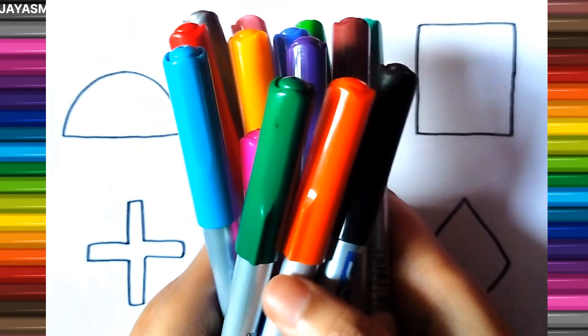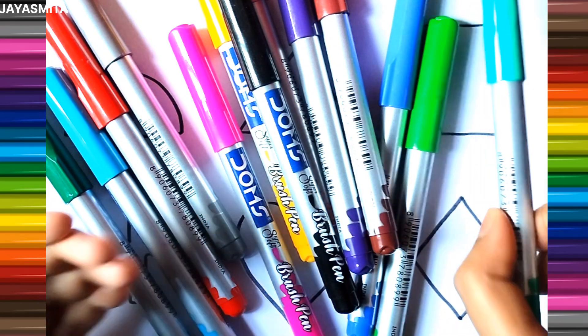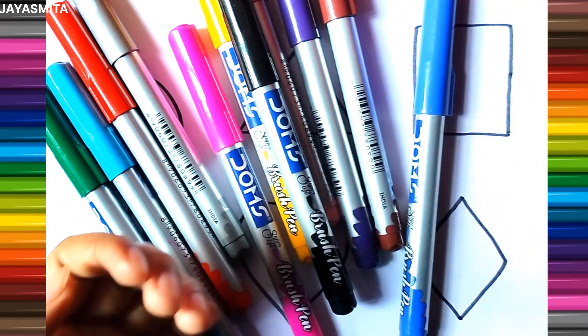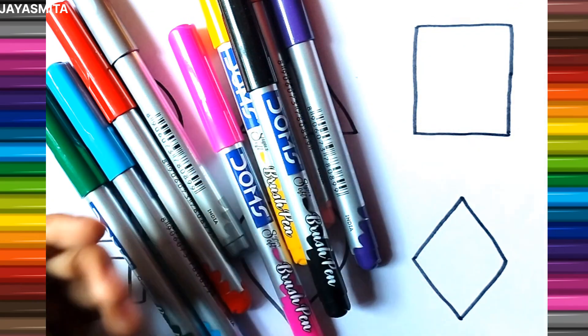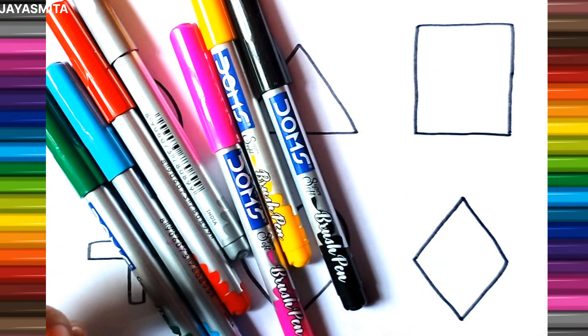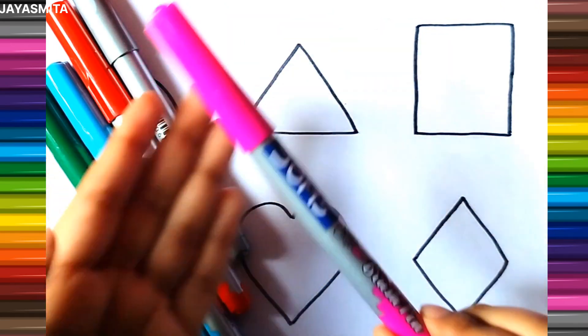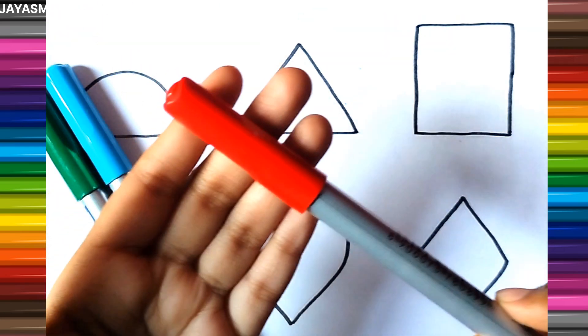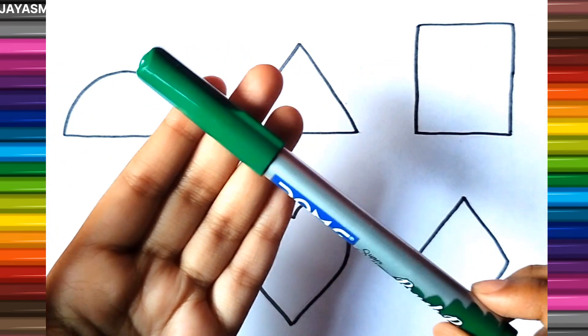Hey kids, let's learn about colors. Orange color, light green color, blue color, brown color, light pink color, black color, yellow color, pink color, silver color, red color, sky color, dark green color.